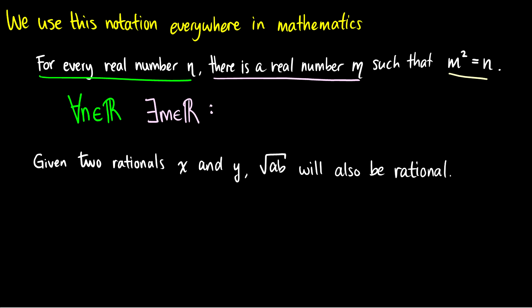We can just leave this the same thing. So we can say m squared is equal to n, or we could say P(m,n), and then we could define that being m squared is equal to n. Either way works, typically we could just write m squared equals n afterwards. So for all real numbers n, there is a real number m such that m squared is equal to n.